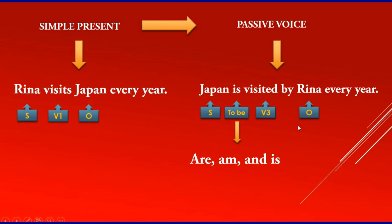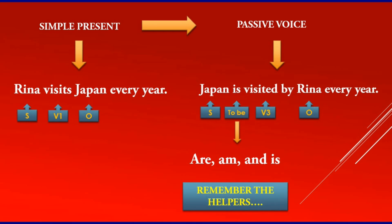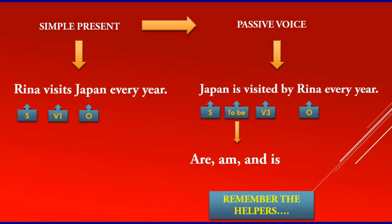I'll tell you the meaning in Bahasa. 'Rina visits Japan every year' in Bahasa is 'Rina mengunjungi Jepang setiap tahun.' The passive version means 'dikunjungi' — the meaning is different. So you have to understand the meaning as well. And the most important thing: remember the helpers. For simple present, we have are, am, and is. Okay, let's practice!